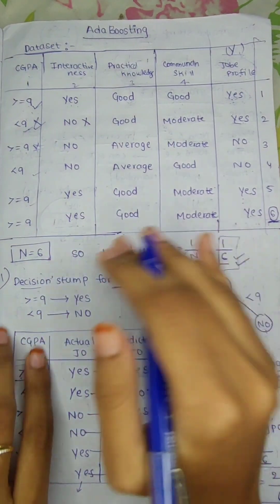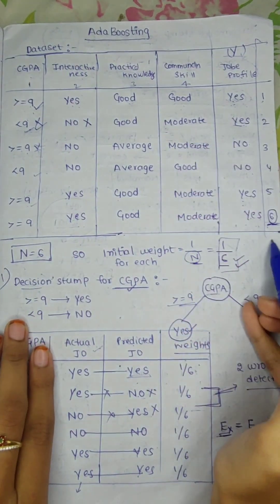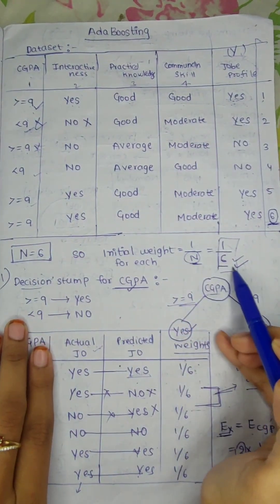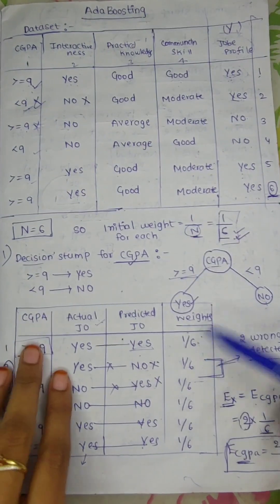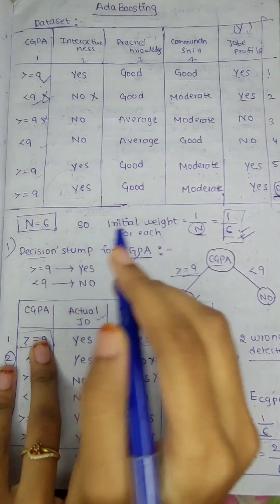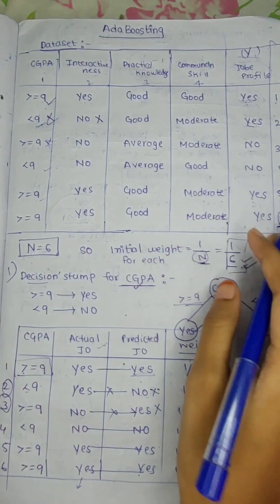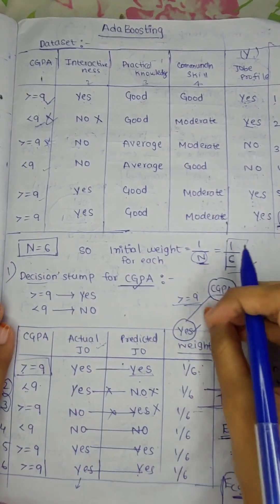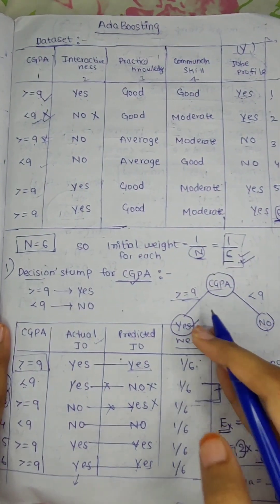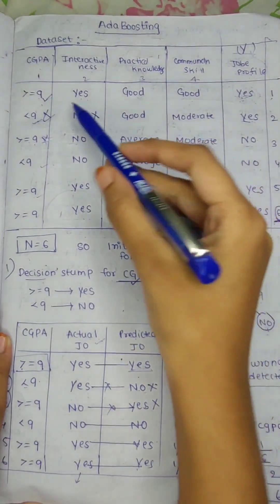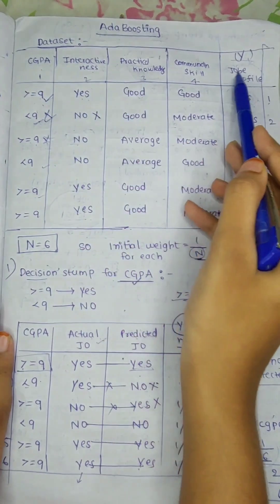The first step in AdaBoosting is to initialize the weights. For all observations, the initial weight is the same: 1 by n, where n is the total number of observations. So for all 6 observations, the first weight is 1 by 6. Next, we have to update these weights based on the different features.